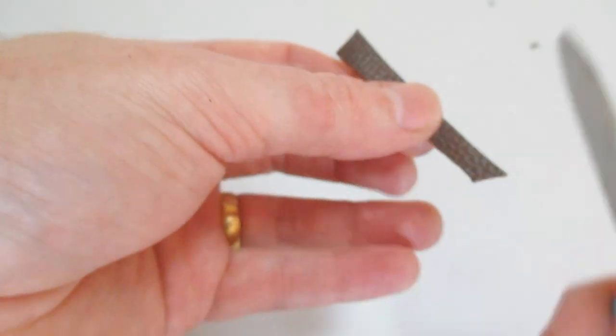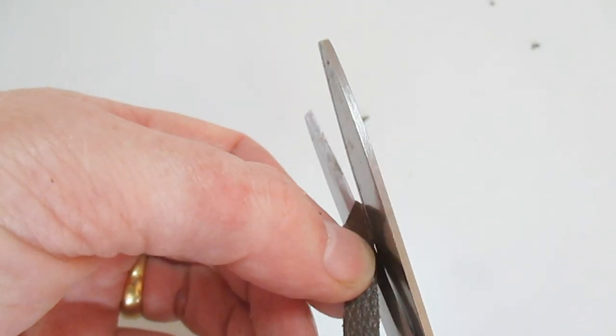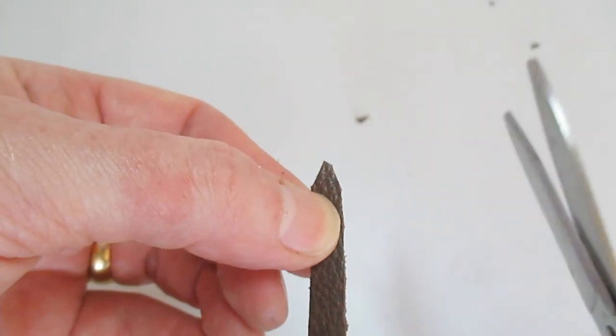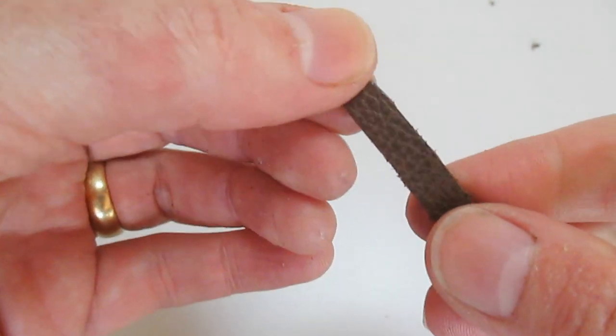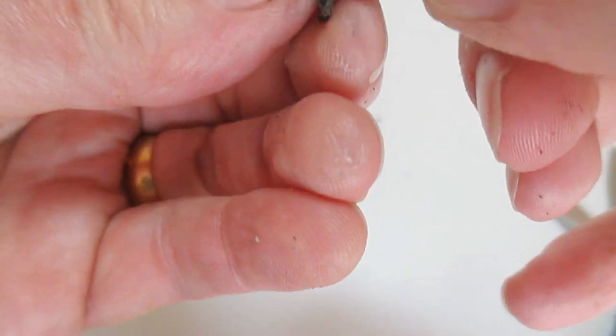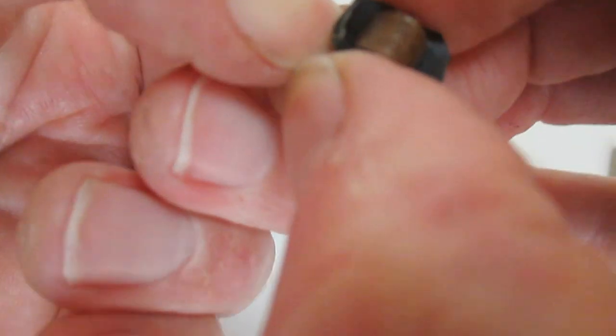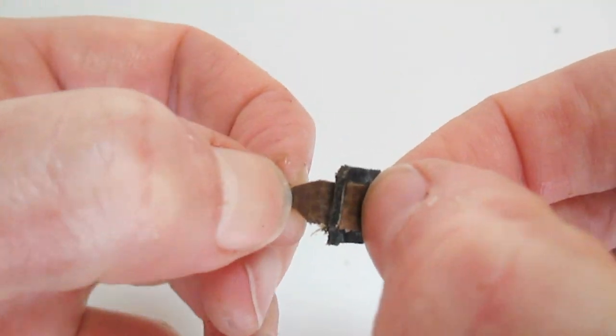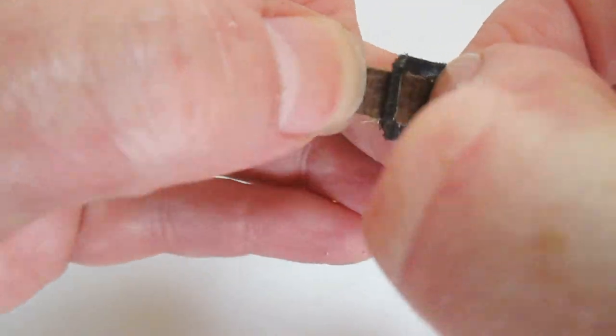So onto the belt piece, I'm just cutting a triangle at the end to make it easier to feed through the buckle piece. It's a bit fiddly but it's not that difficult.